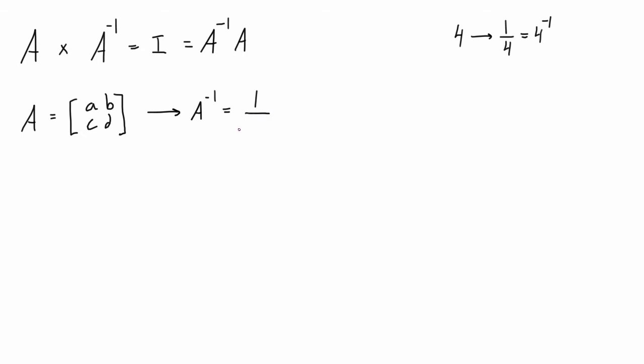So this works for every 2 by 2 matrix and it will reveal if we have an inverse or not. Basically if the determinant of the matrix is 0, then this is going to be undefined and basically that means that we don't have an inverse for the matrix A.